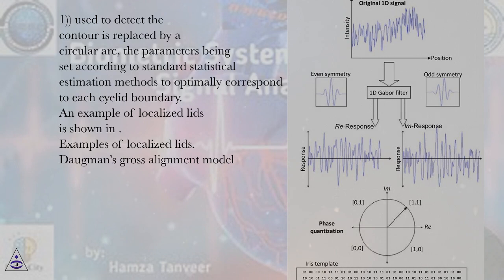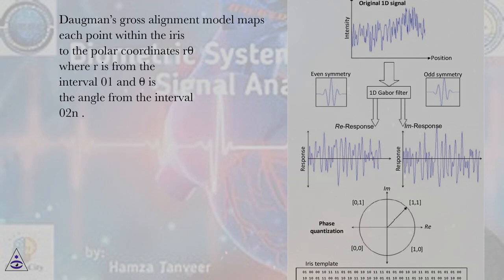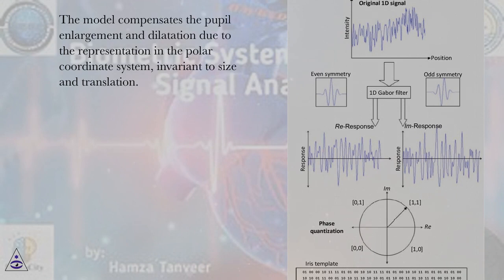Dogman's Gross Alignment Model maps each point within the iris to the polar coordinates R and theta, where R is from the interval 0 to 1 and theta is the angle from the interval 0 to 2π. The model compensates the pupil enlargement and dilation due to the representation in the polar coordinate system, invariant to size and translation.